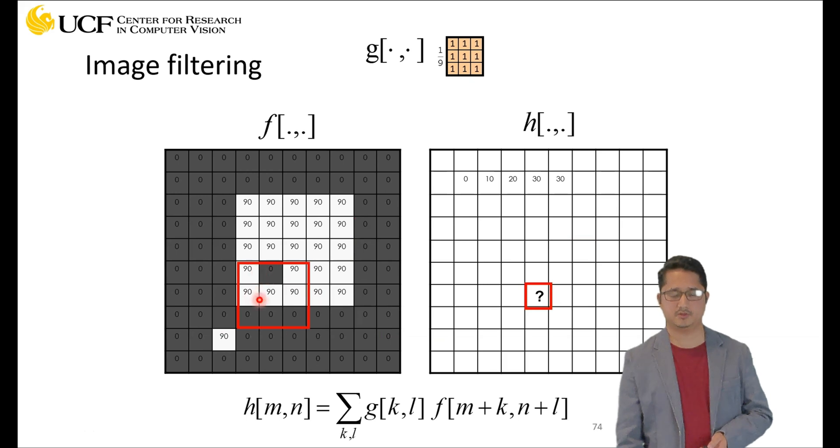So you just add these values, this will be 450 divided by nine, that's going to give you 50.